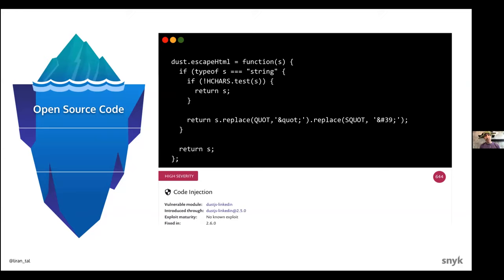Let's take a look at a code snippet from a popular open source library you might have used in a Node.js web application. Can you spot the code injection vulnerability that hides here? Once those vulnerabilities become publicly known, the first thing you want to do is know about them so you can take actions like upgrading to a fixed version, applying a patch if there's no upgrade fix, or migrating away to a different library if needed.